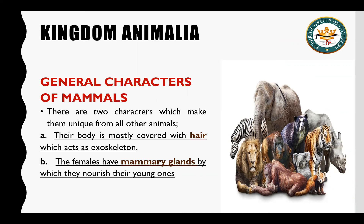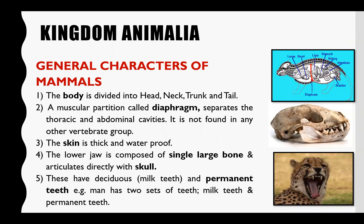دو major چیزیں جو کہ mammals کو تمام vertebrates سے differentiate کرتی ہیں: ایک تو ان کی body جو ہے وہ hair سے cover ہوتی ہے — whole body hair سے cover ہوگی یا certain regions پر hair growth موجود ہوگی۔ اسی طرح دوسری feature presence of mammary glands ہے جس سے یہ young ones کو nourish کرتے ہیں۔